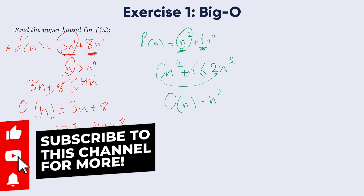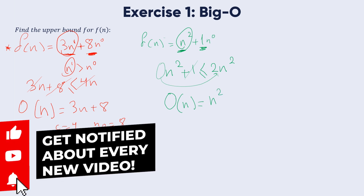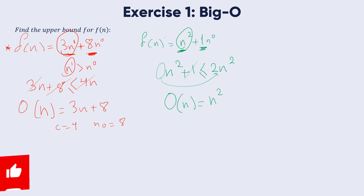For every n greater than 1, therefore the Big O notation of this function is O(n²). We are simply getting the highest order of the function, with c equal to 2 and n₀ equal to 1.